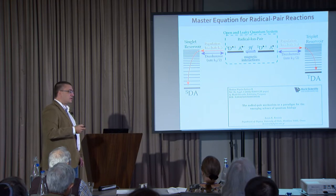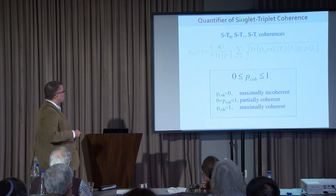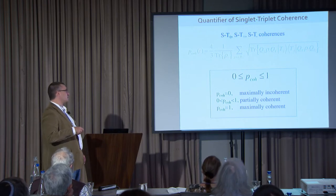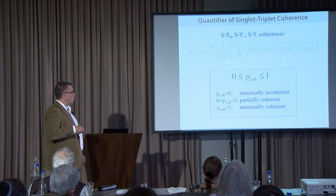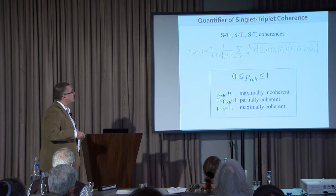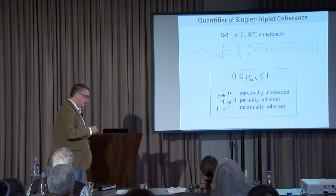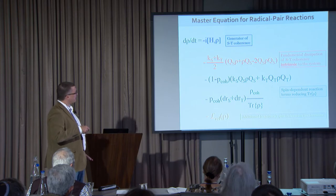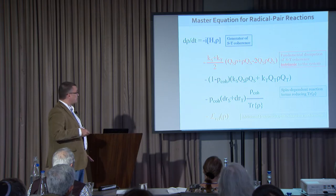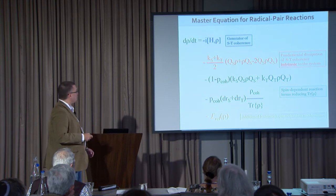Essentially we introduced the understanding of coherence in the system by introducing decoherence. We also had to introduce a quantifier of singlet-triplet coherence — there are three triplet states and three kinds of coherences between the singlet and all three triplets. This quantifier is a parameter between 0 and 1, like in light coherence: 1 means maximally coherent, 0 means maximally incoherent. After extensive derivation, we arrive at a master equation describing the fundamental quantum dynamics of the system, containing the generator of coherence — the Hamiltonian interactions — and a dissipator of coherence intrinsic to the system.